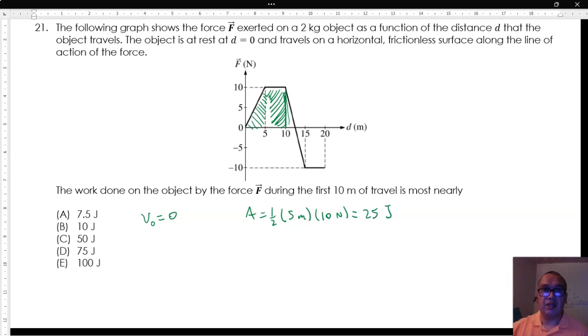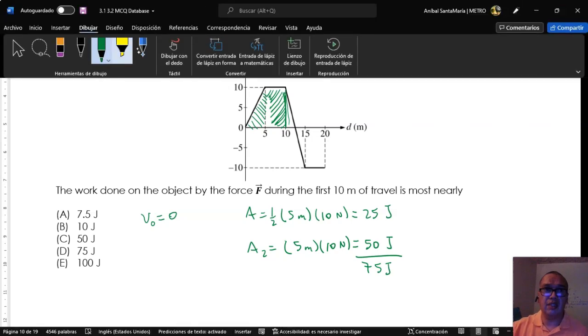The second area is equal to base times height, which is equal to 50 joules. The total work then is 75 joules. That is option D.